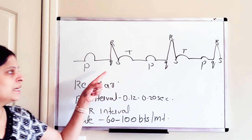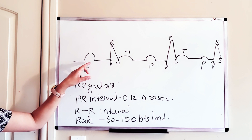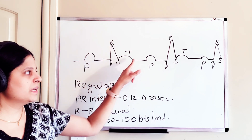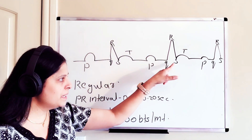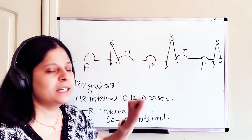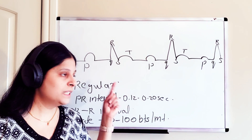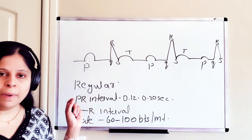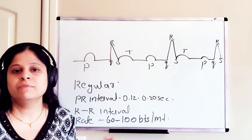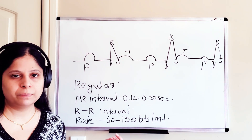So with one beat you can see three things: P wave, QRS complex, and T wave. The next beat shows the same — P wave, QRS complex, and T wave. Nothing is missing on this ECG rhythm, but you still need to determine if it's a regular or irregular rhythm, or a normal sinus rhythm.